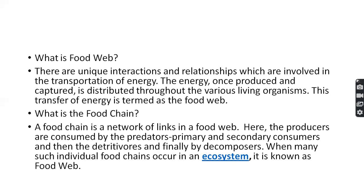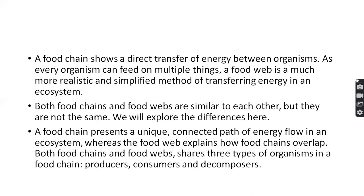When many individual food chains combine in an ecosystem, that is what we call a food web. A food chain shows the transfer of energy from organism to organism, and each organism depends on another organism for survival. For example, human beings depend on plants, and also on other animals. Plants in turn depend on sunlight. Food web is much more realistic — it shows how energy is transferred from one trophic level to another.